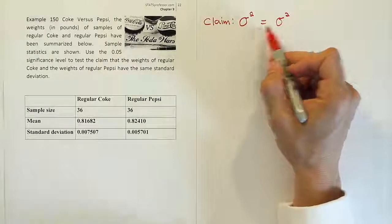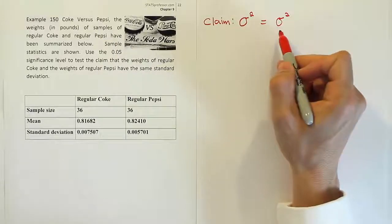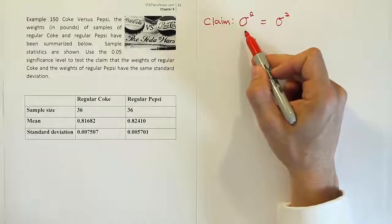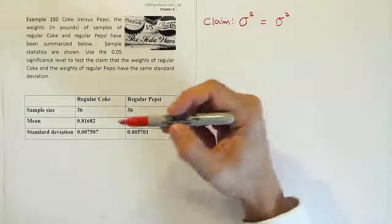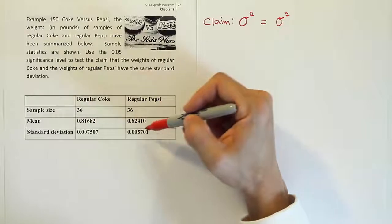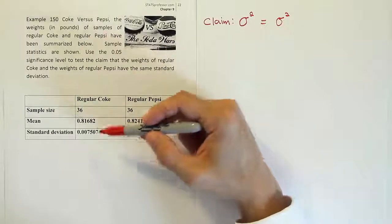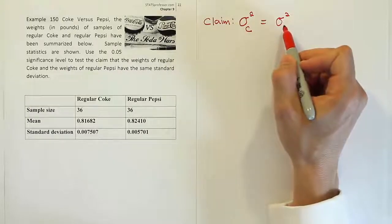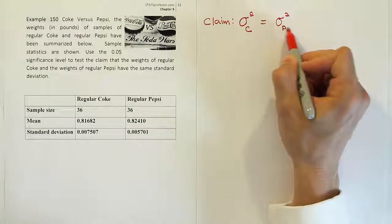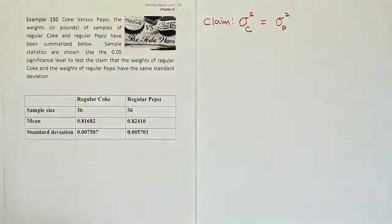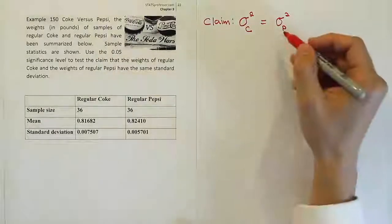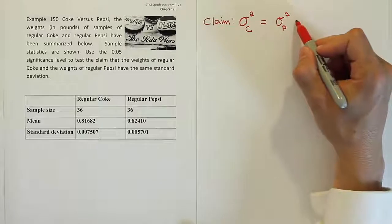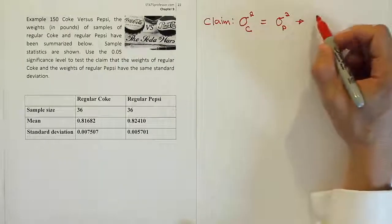If you remember what I said earlier in the videos, I mentioned that we want to make sure that the one that has the larger variation goes first here for the test. So I see that Coke is a little bit larger than Pepsi here, so I'm going to put that one first. So I'm going to say the variance for Coke is equal to the variance for Pepsi, and again, I put it first. The reason why is usually we do a ratio where we divide this guy and this guy by the same thing. For example, this claim is exactly the same as this statement here.